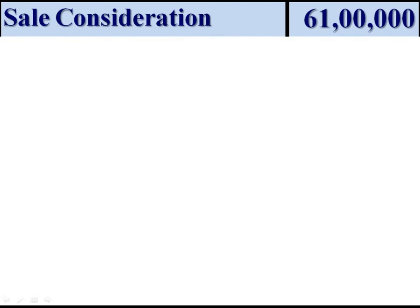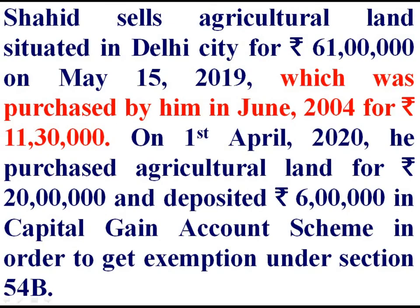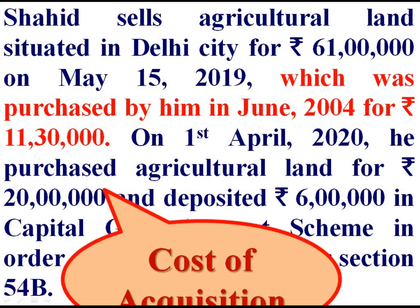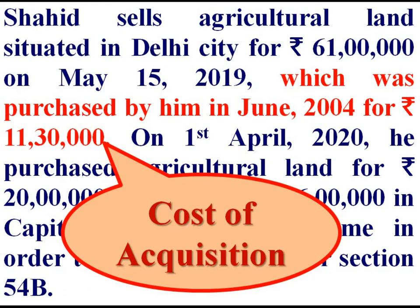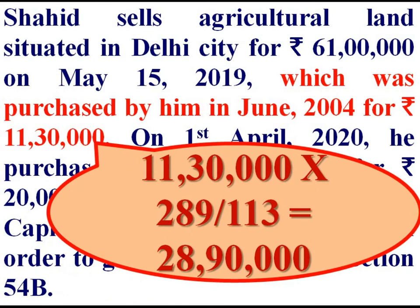As it is a long-term capital asset, deduct the indexed cost of acquisition. The asset was purchased by the assessee in June 2004, that is in the previous year 2004-05, for Rs 11,30,000. This is the cost of acquisition and we have to find out the indexed cost of acquisition: Rs 11,30,000 multiplied by the index for 2019-20, which is 289, divided by the index for the year of purchase 2004-05, which is 113. This gives us Rs 28,90,000 as the indexed cost of acquisition.